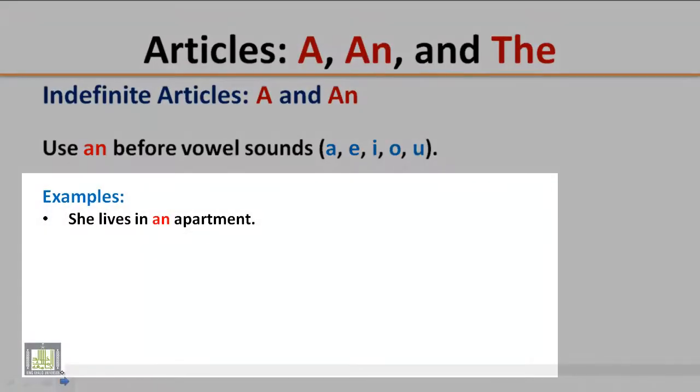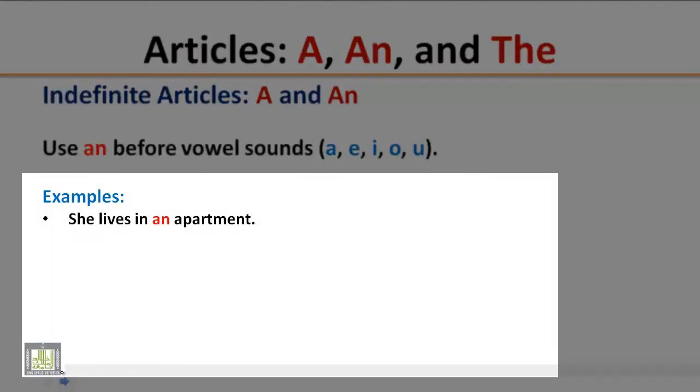Example: She lives in an apartment. The word apartment starts with a vowel sound, so it is preceded by an.